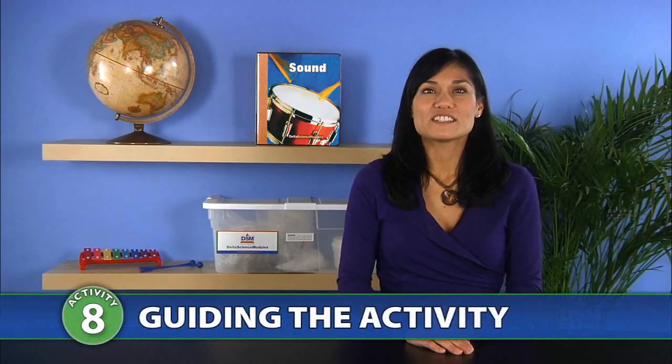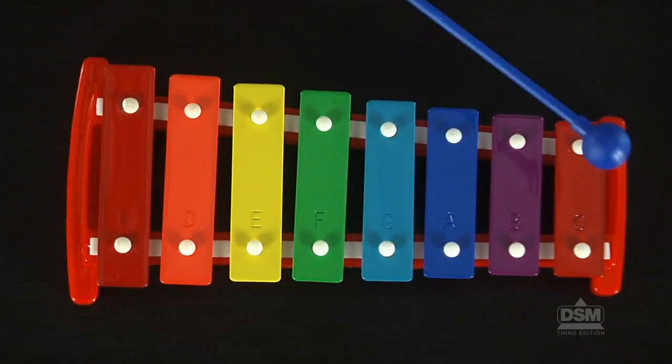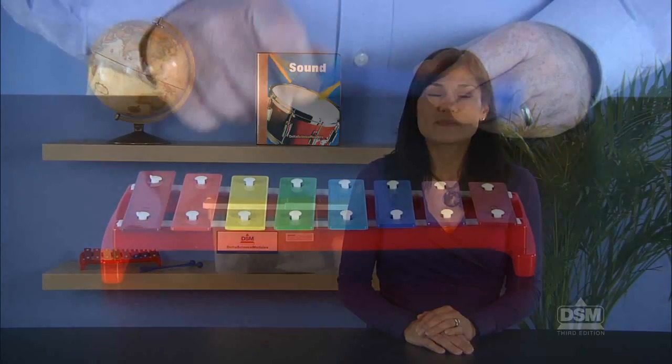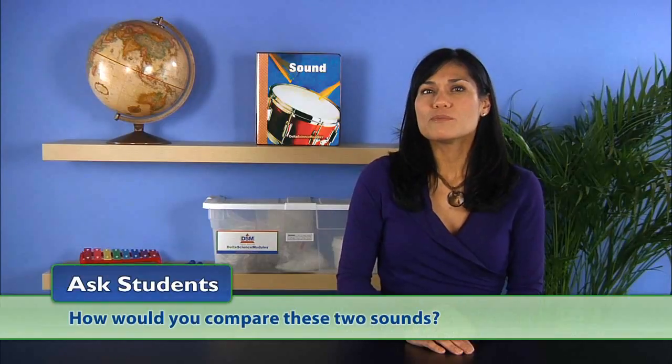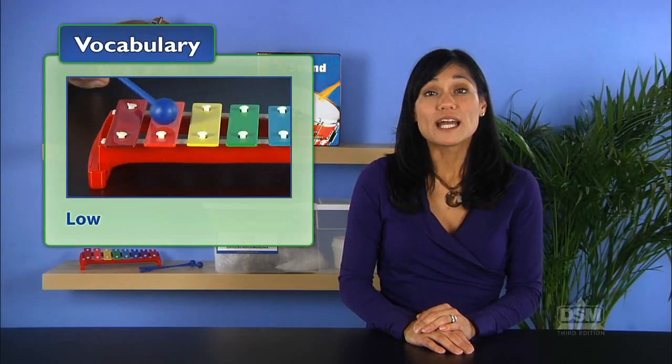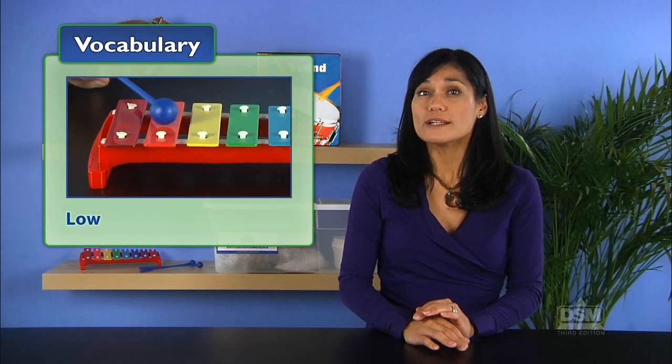To begin the activity, hit the longest bar and then the shortest bar on the xylophone with about the same intensity. Ask students, how would you compare these two sounds? The students should say that the sound produced by the longest bar is low and the sound produced by the shortest bar is high.